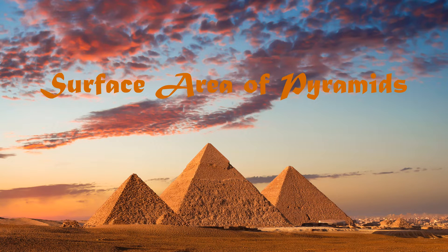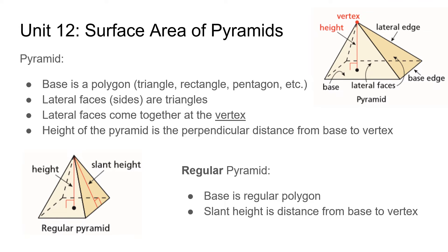Let's talk about the surface area of pyramids and how we can calculate it. Most of you have seen a pyramid before — those pictures from Egypt. But what really is a pyramid? A pyramid is just several polygons molded together to form a three-dimensional shape. The sides of a pyramid are flat triangles, all folded up from a base, which can be any shape — a square, rectangle, hexagon, octagon, or whatever.